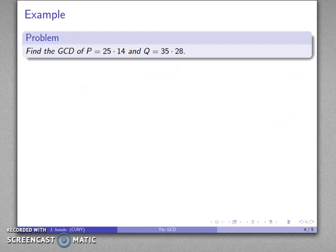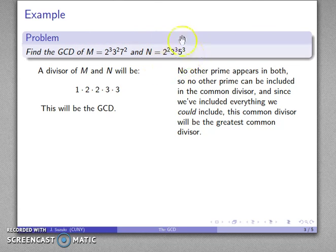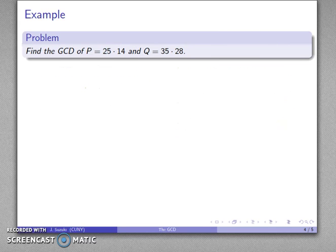An important idea to recognize is that all of this relies on having the prime factorization of the numbers, because that's the only time we can guarantee when a number does or does not divide one of two numbers. Because 7 is in this prime factorization, I can guarantee 7 divides m. Because 7 is not in this prime factorization, I can guarantee 7 does not divide n. I can't say the same thing if I have a non-prime factorization.